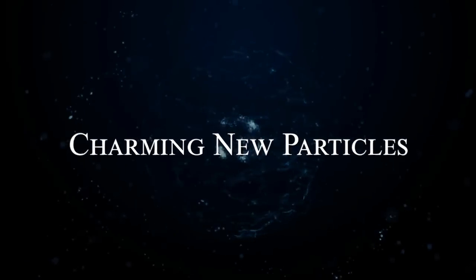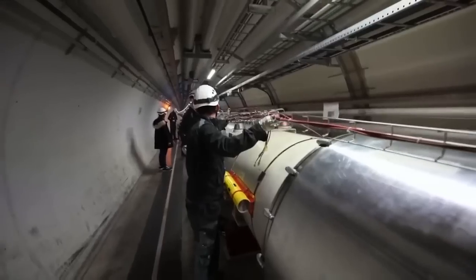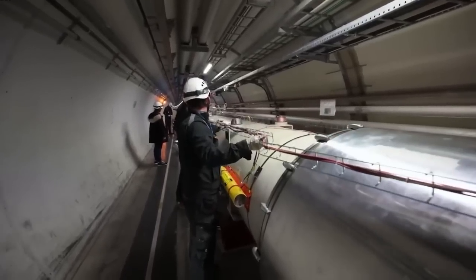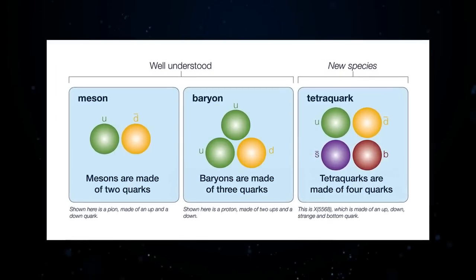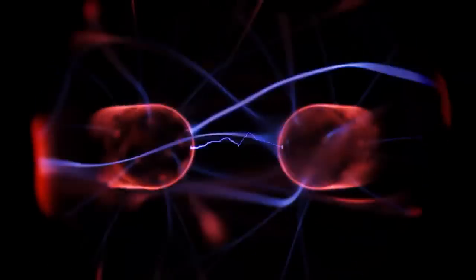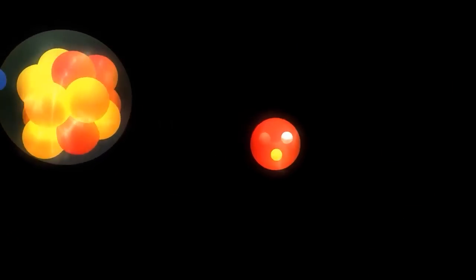Charming new particles. So far, the LHC has discovered 59 new hadrons. Among these are the most recently found tetraquarks, as well as new mesons and baryons. All of these new particles are made up of heavy quarks like charm and bottom.